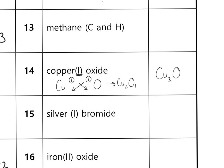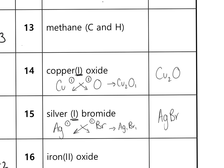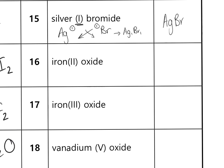Silver bromide: silver is Ag (valency one from brackets), bromine is in group seven (valency one also). Swap and drop gives Ag¹Br¹, and ignoring the ones the formula is AgBr. Try examples 16 to 20 yourself, then stop at example 20.